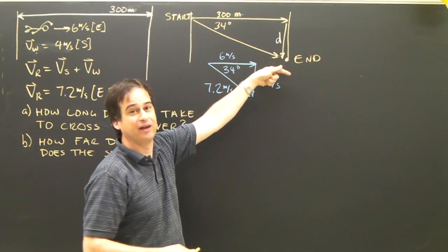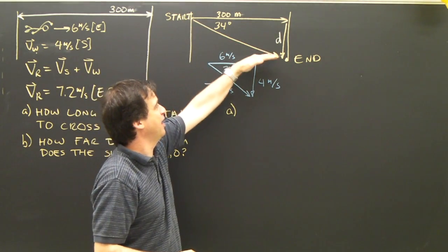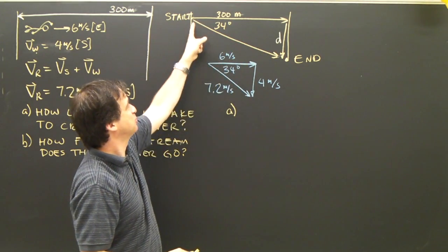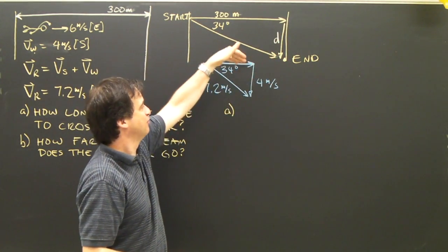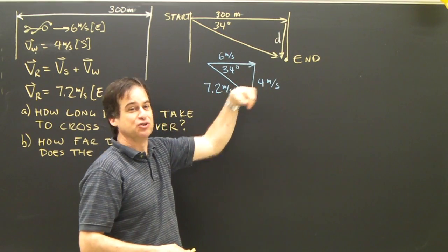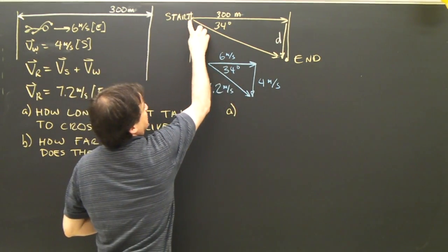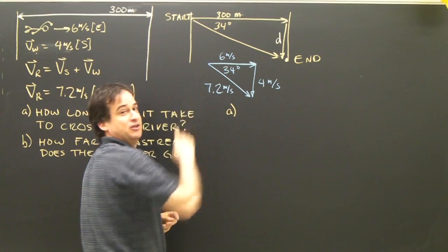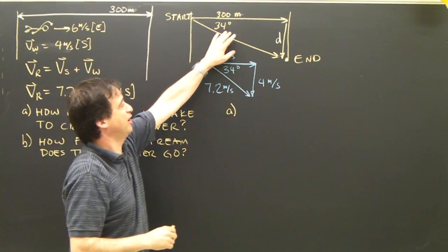The swimmer is taking this path. But when the swimmer takes this path, they're going 6 meters per second towards that side and 4 meters per second downstream. So every second, the swimmer ends up 6 meters over there and 4 meters down there. And so these two triangles are going to help.